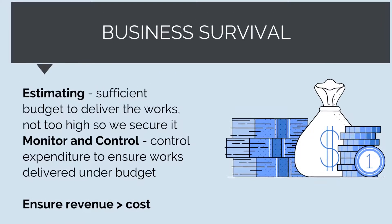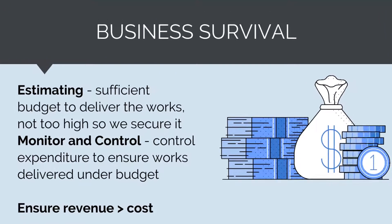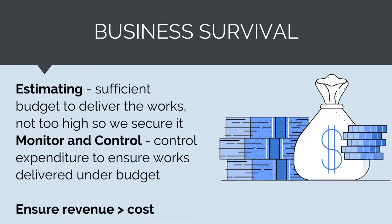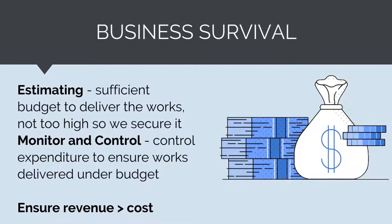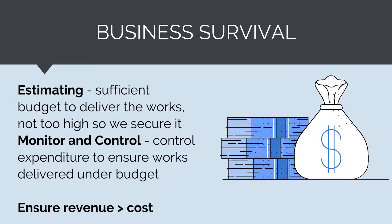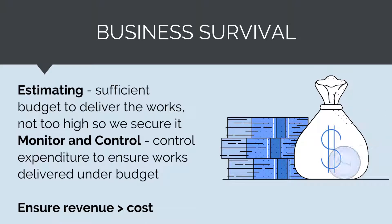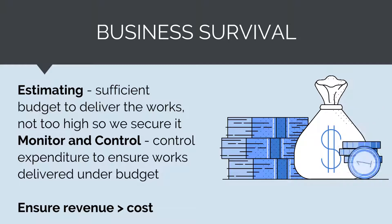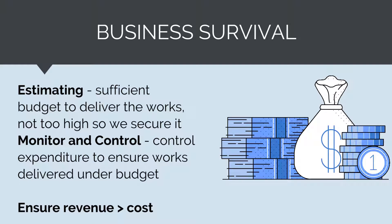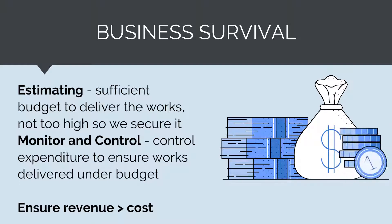So how do we do this? We need to use cost estimating to accurately estimate project costs and ensure there is sufficient budget to deliver the works if we're successful, but not over-estimate costs too much so our price is too high and we aren't able to secure work. Then, during construction, we'll need to accurately control and monitor costs, carefully tracking actual expenditure against planned expenditure to ensure we remain within our budget.